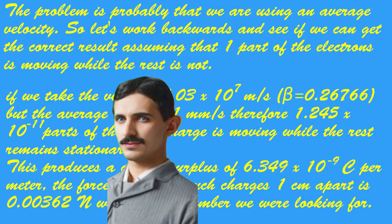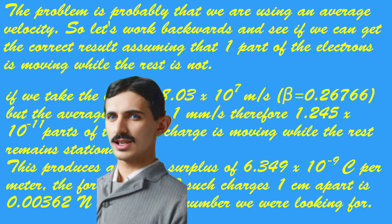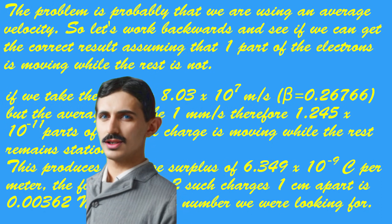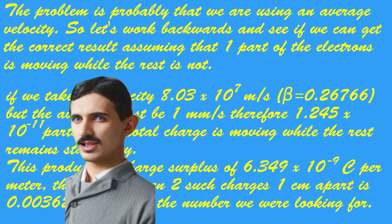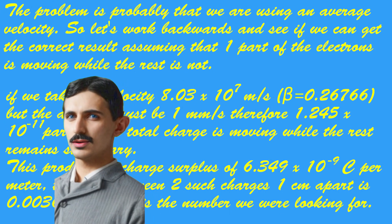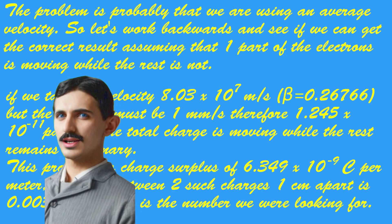However, we can correct this by dividing the electrons into two groups. One is stationary, the other, much smaller group, is moving at a velocity slightly over one-quarter of the speed of light. This produces the correct number.